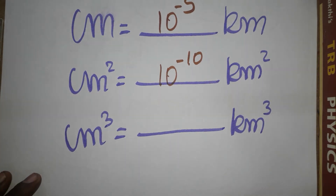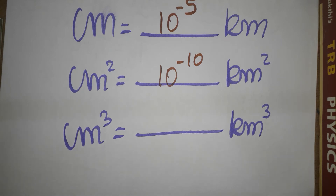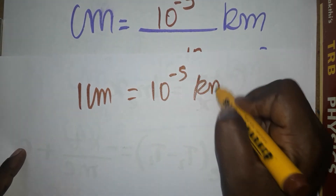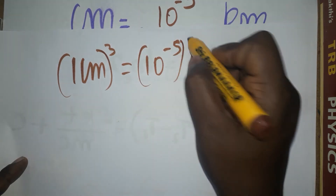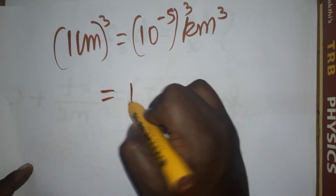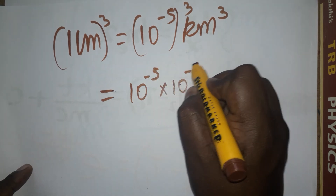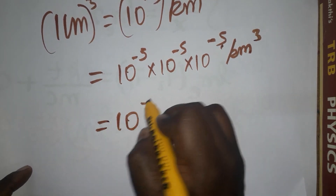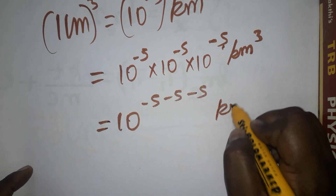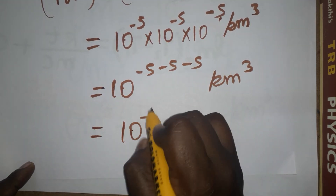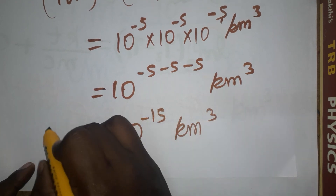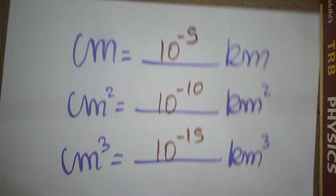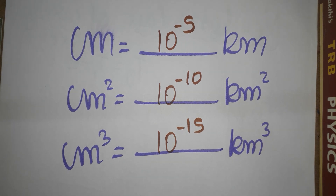Next, one centimeter cube equals how many kilometer cube? We know one centimeter equals 10⁻⁵ kilometer. Now we cube the equation — cube means three times: 10⁻⁵ × 10⁻⁵ × 10⁻⁵ kilometer cube. The powers add: minus five minus five minus five equals minus fifteen. So one centimeter cube equals 10⁻¹⁵ kilometer cube. If you like my channel, please subscribe. Thank you for watching my video.